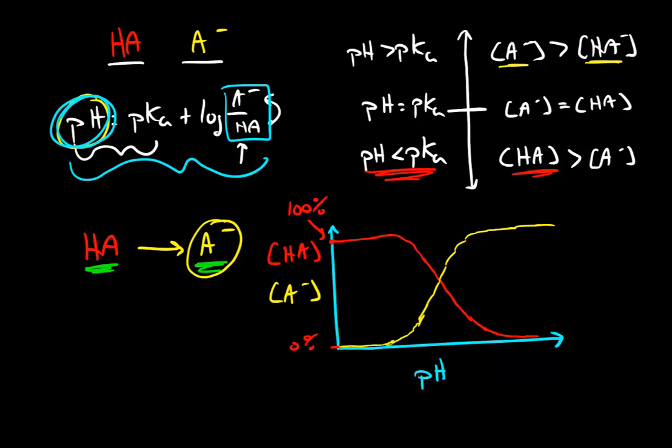So we have these two related curves. The concentration of the acid, which we start with at really acidic pHs, starts at 100% and drops off to 0%. While the concentration of the base, which is really small at acidic pHs, increases as the pH becomes more basic. At some point, it reaches about 100%.